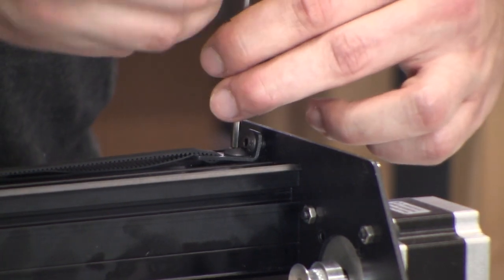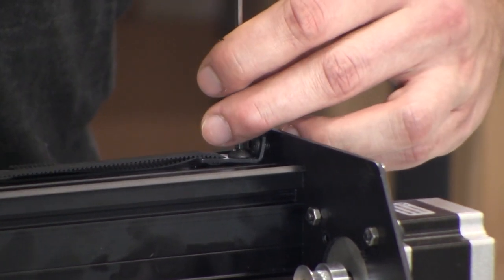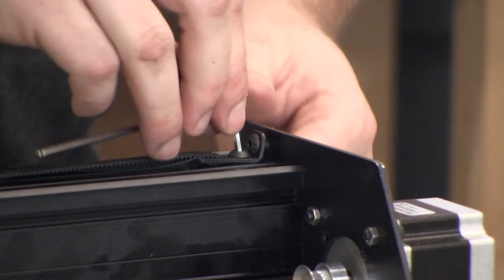After you've tensioned the belt, tighten the small screw, and this will hold the belt clip in place on the maker slide.